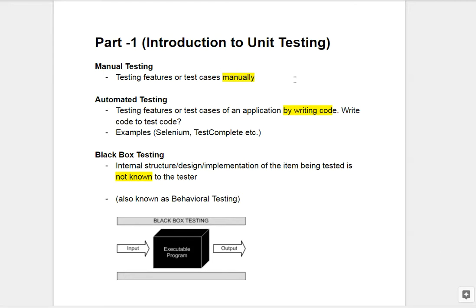We know what is manual testing. Manual testing means you test your features manually. For example, you need to test a login screen and there are two fields — login and password — and there is a login button. You will enter different logins and passwords, correct and wrong, and click the login button to see if it is working or not. This is manually done.